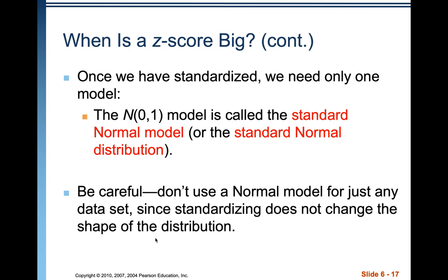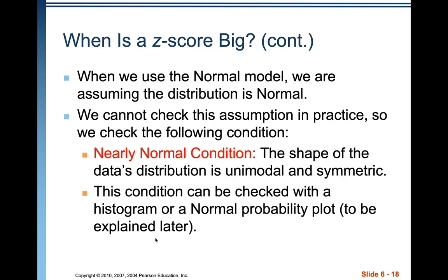We can't use this for just any data set — it has to be one that's plausibly normal. Standardizing data does not change the distribution; you can still find the z-scores, you just can't calculate probabilities based on normality if normality doesn't exist.